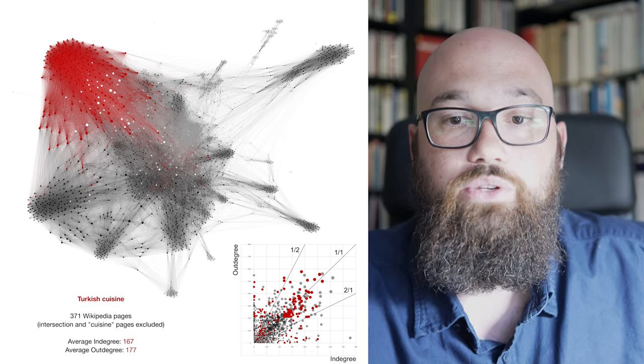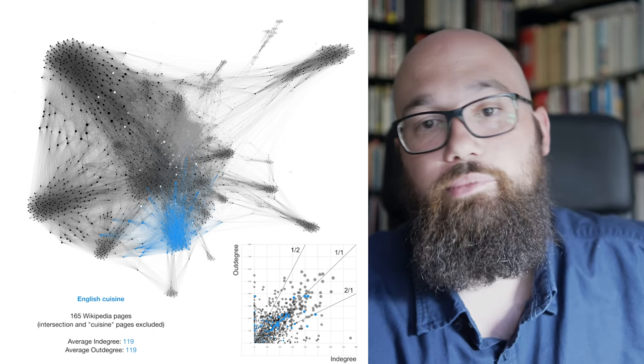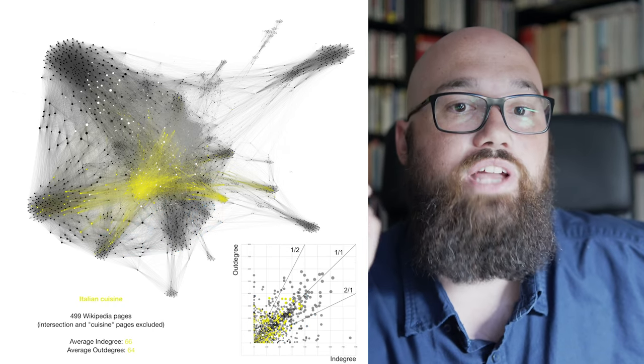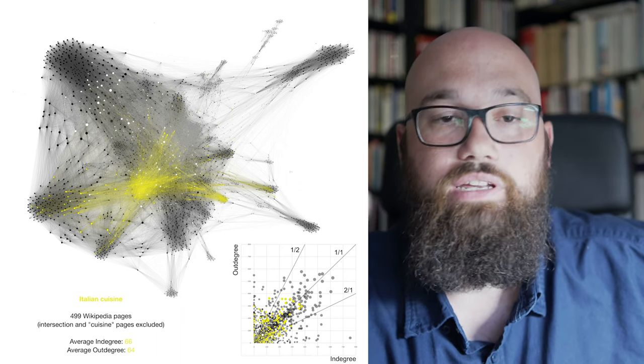And when you look at the scatterplot for the others, you also see, for example, in the Italian example, that these internal connections are way less prominent, apparently, in this network.